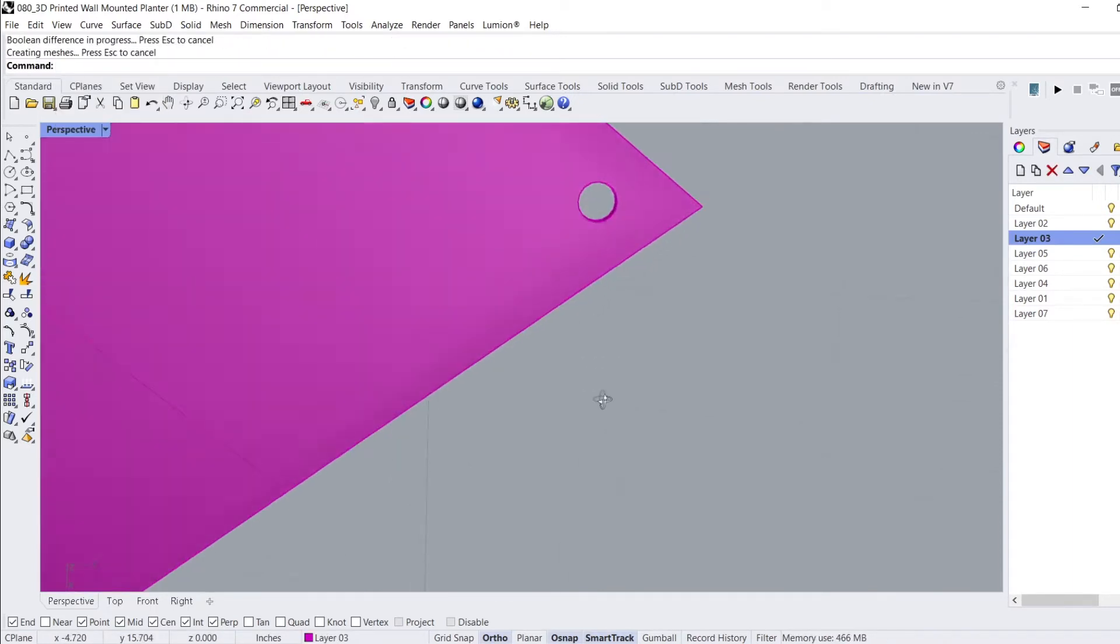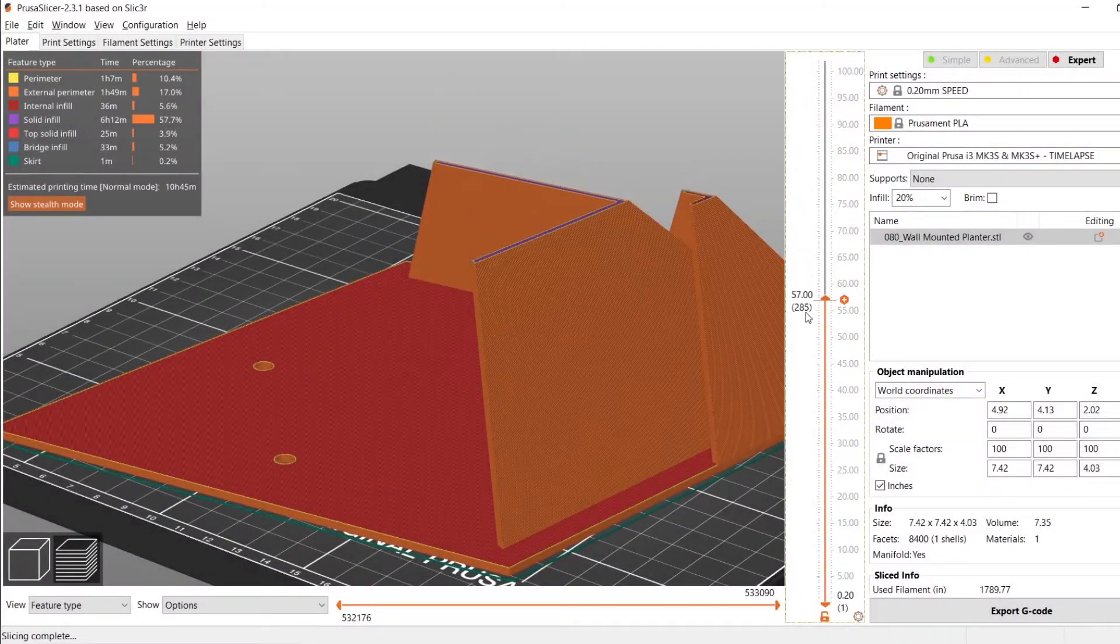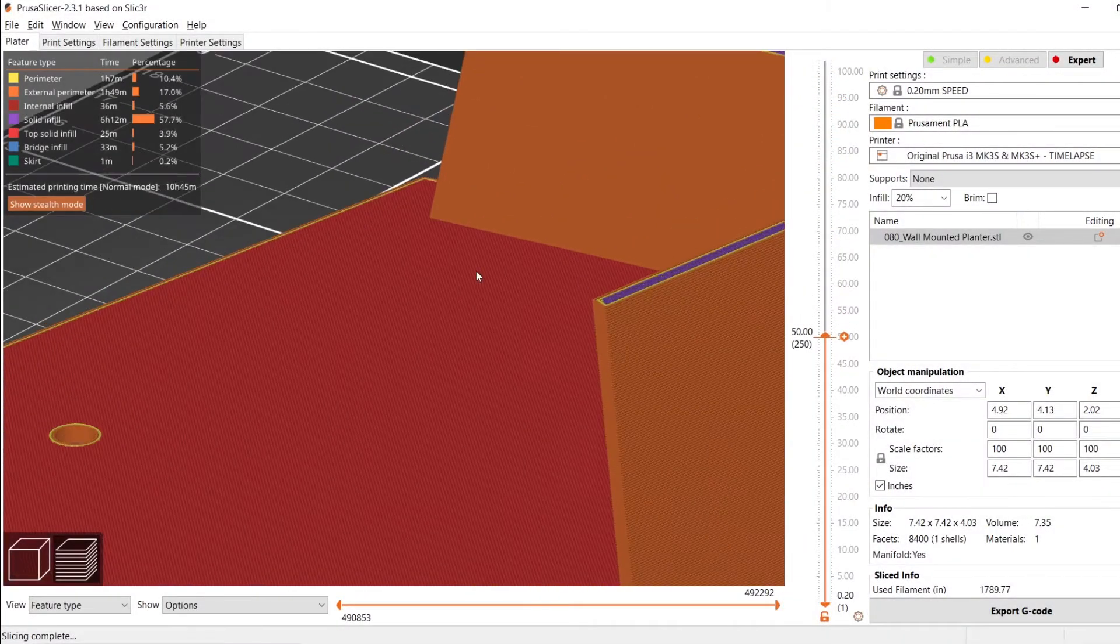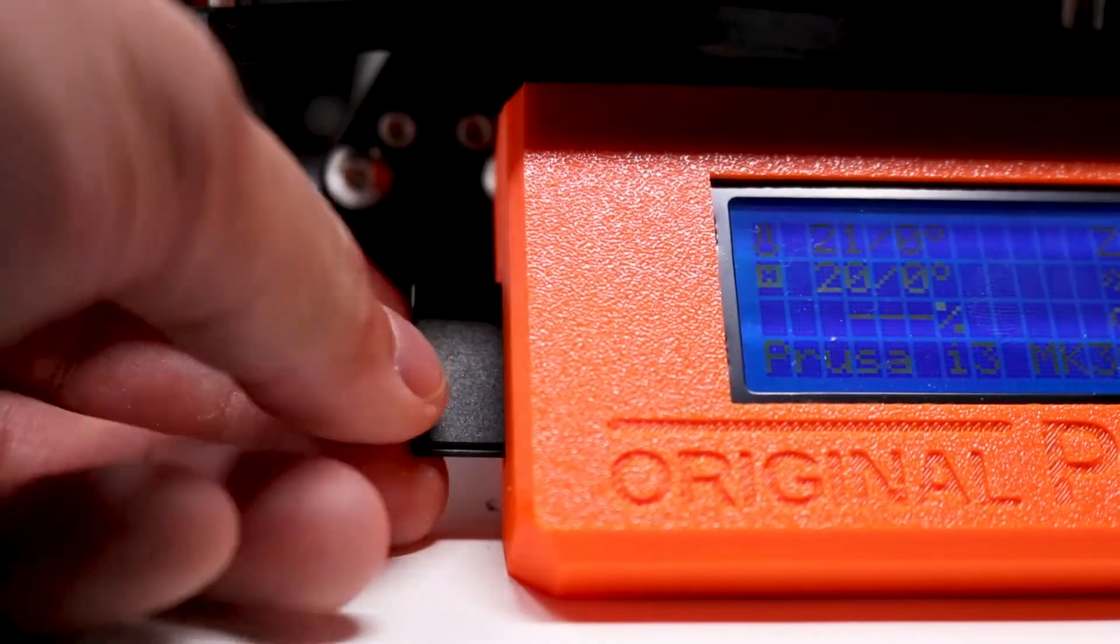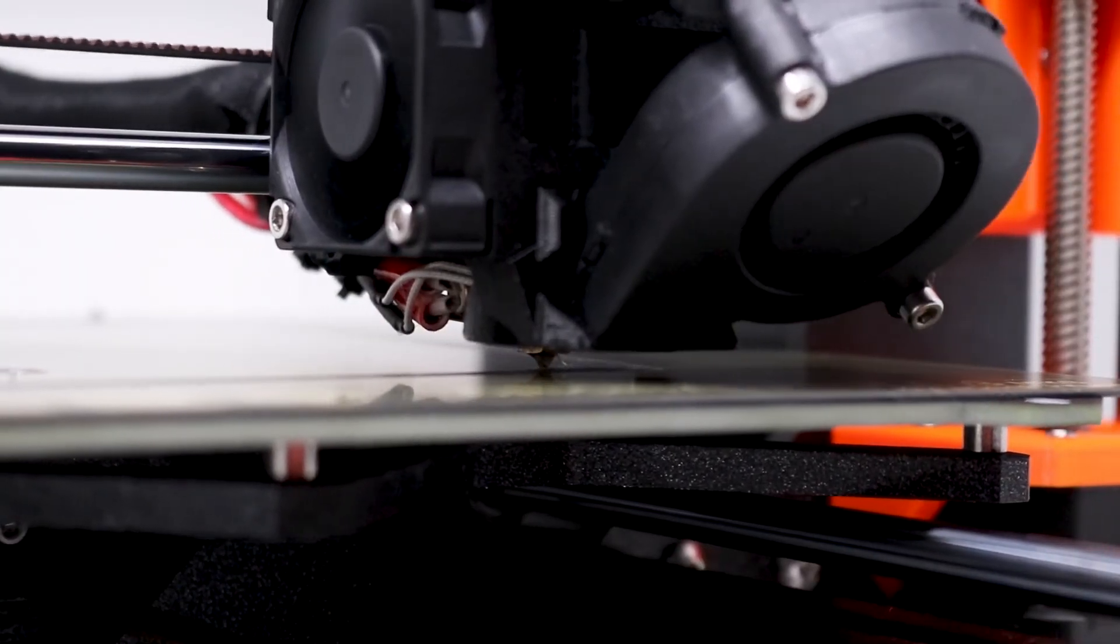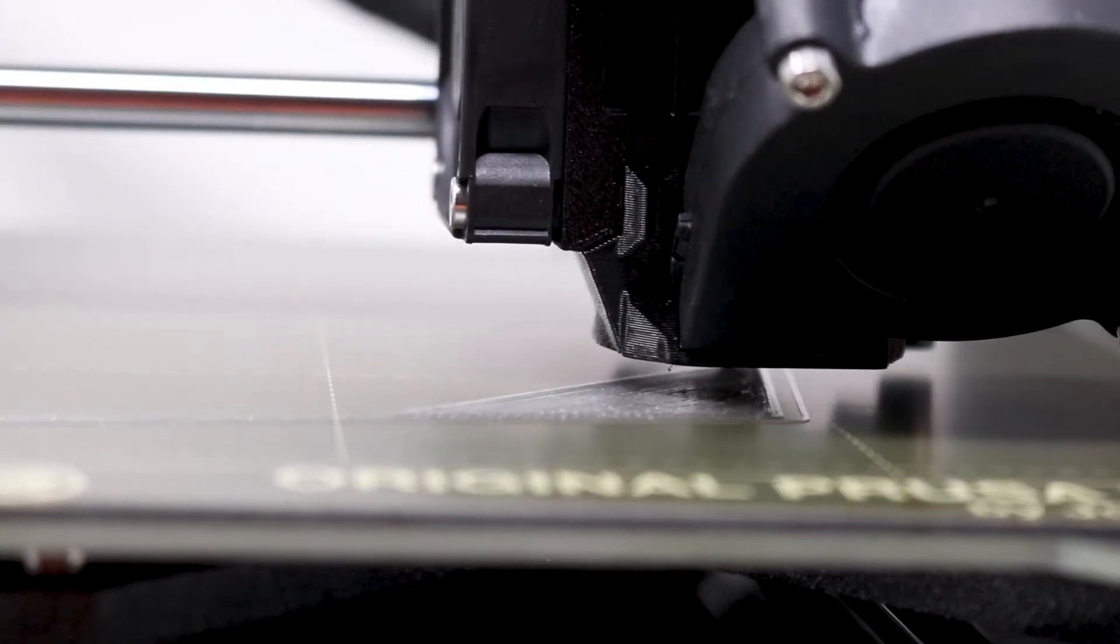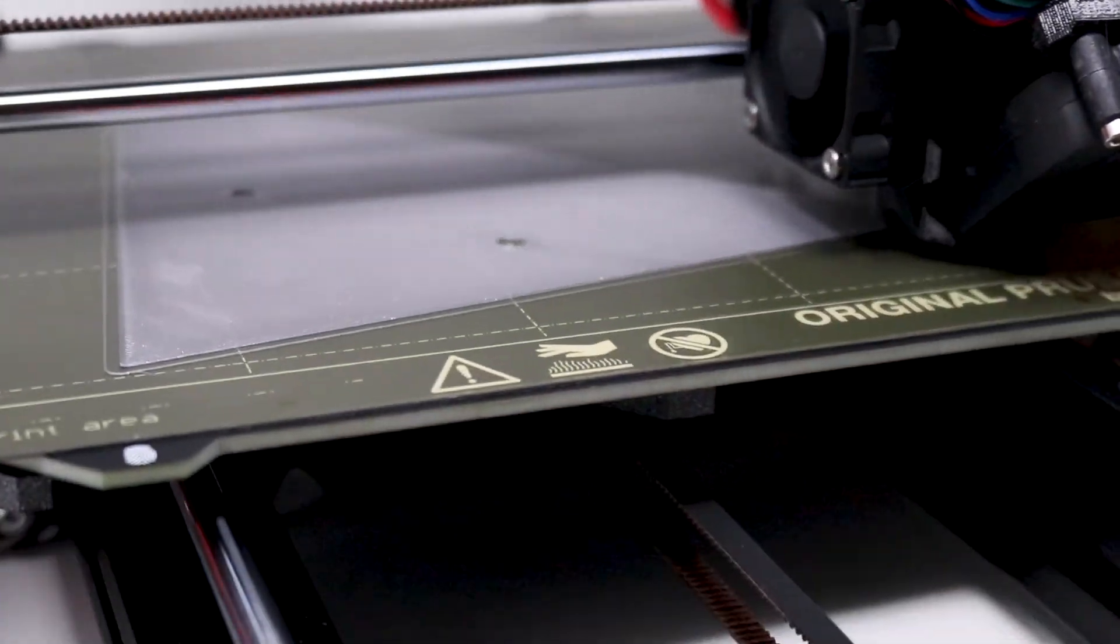I followed the same commands to cut the circles out of the diamond backer plate. After loading up Prusa Slicer, I imported the model, sliced it, and exported the file for printing. I inserted the SD card into my Prusa 3D printer, located the file, and started the print. My plan is to print three of these wall planters so I could arrange them on my wall and see how the pattern would look.